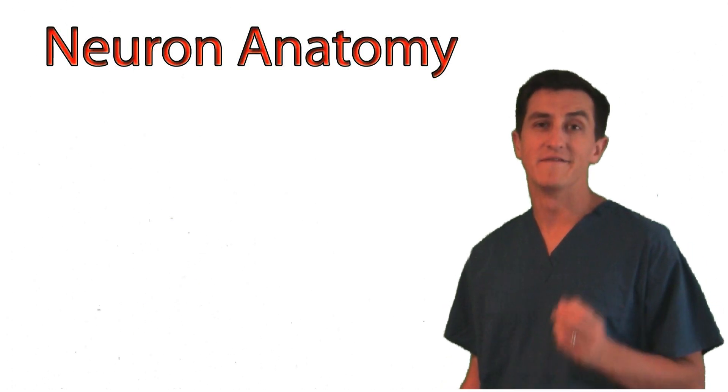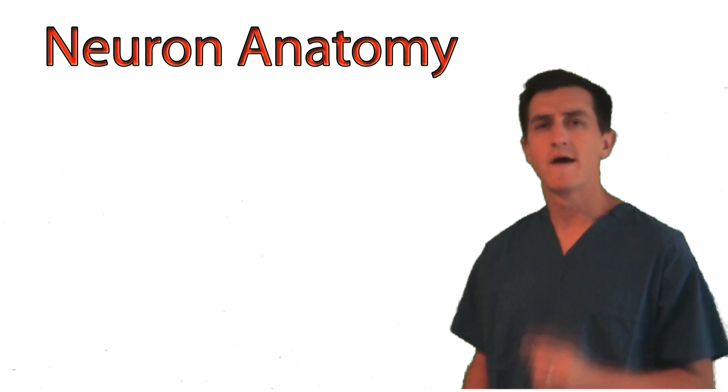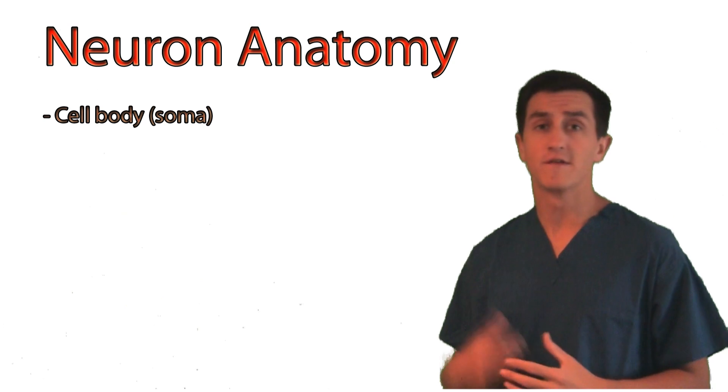Let's talk a little bit about the anatomy of a neuron. Neurons in general have three important components. The first component is what is known as the cell body or the soma.